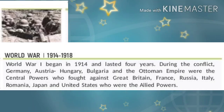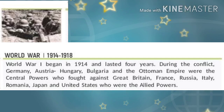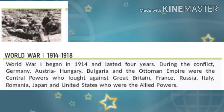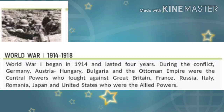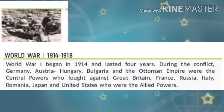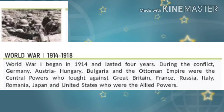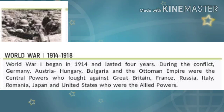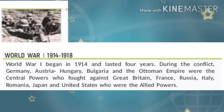World War I began in 1914 and lasted four years till 1918. During the conflict, Germany, Austria, Hungary, Bulgaria and the Ottoman Empire were the central powers who fought against Great Britain, France, Russia, Italy, Romania, Japan and the United States, who were the allied powers.